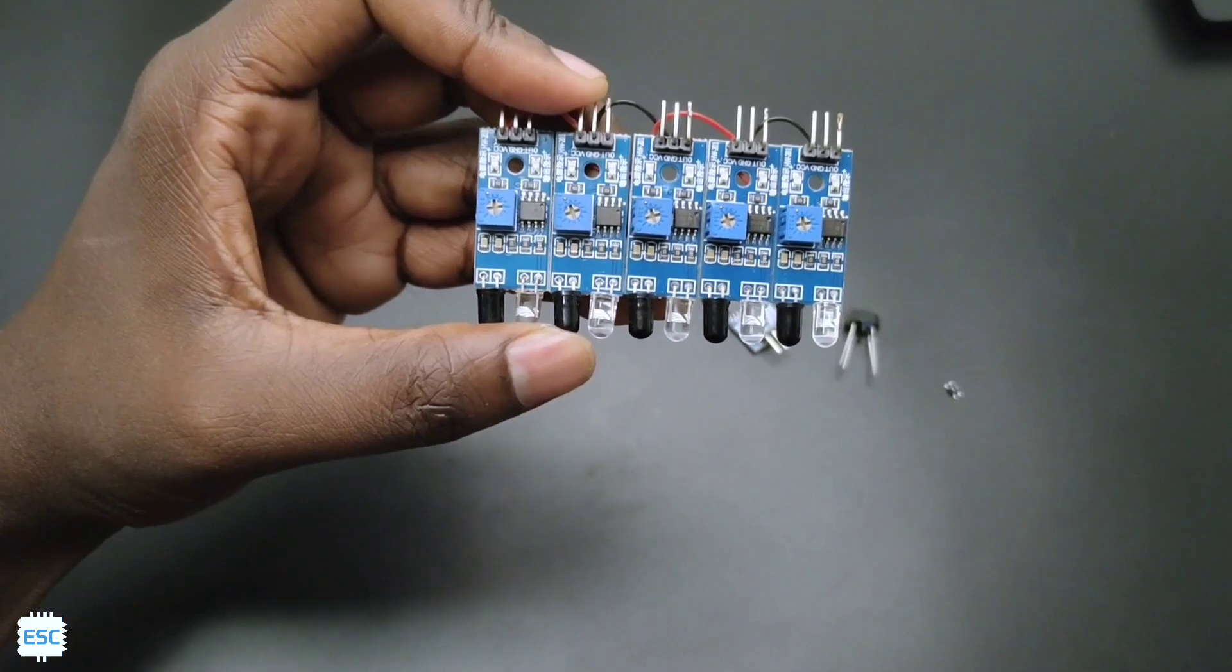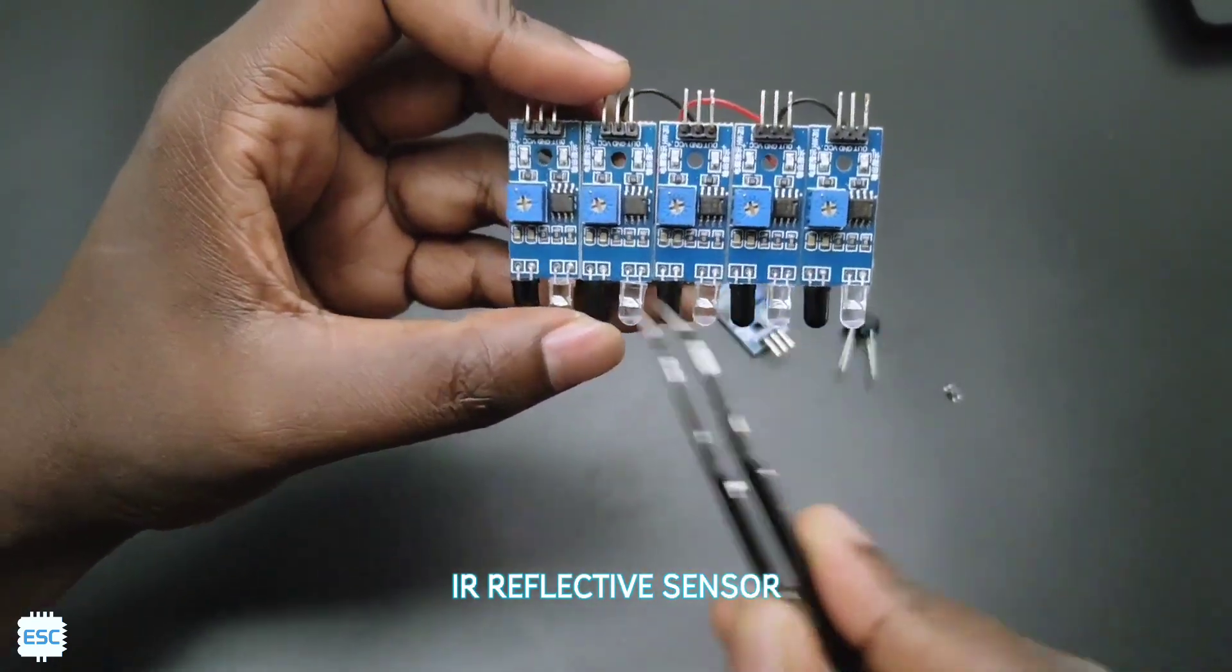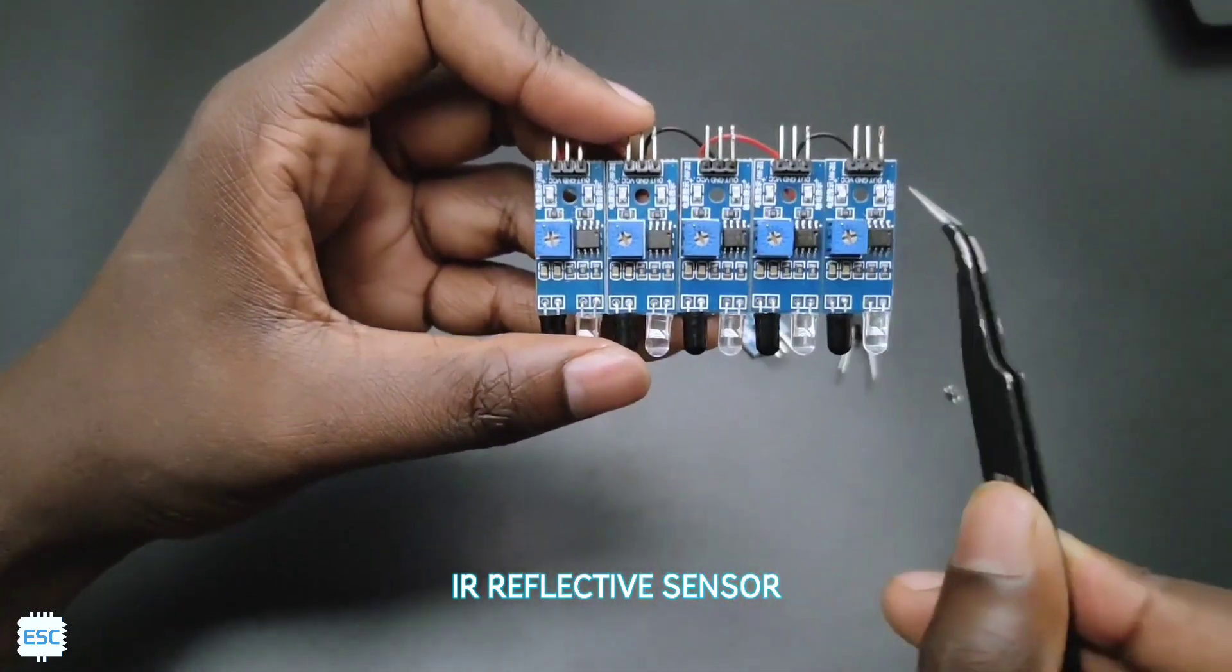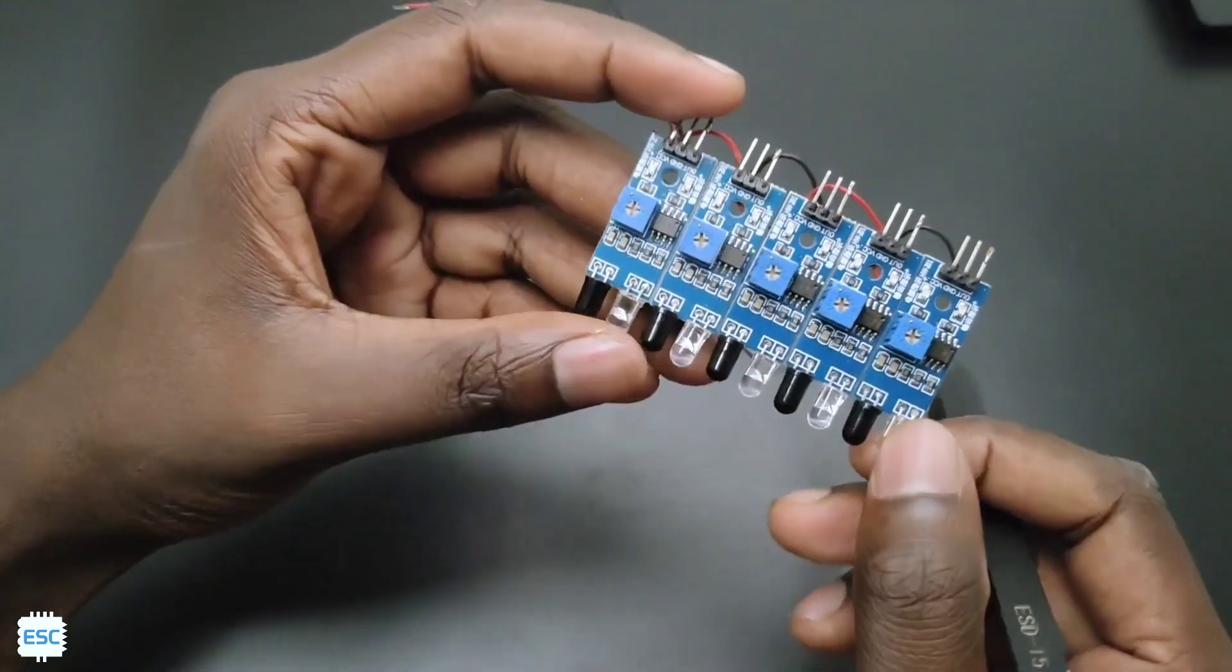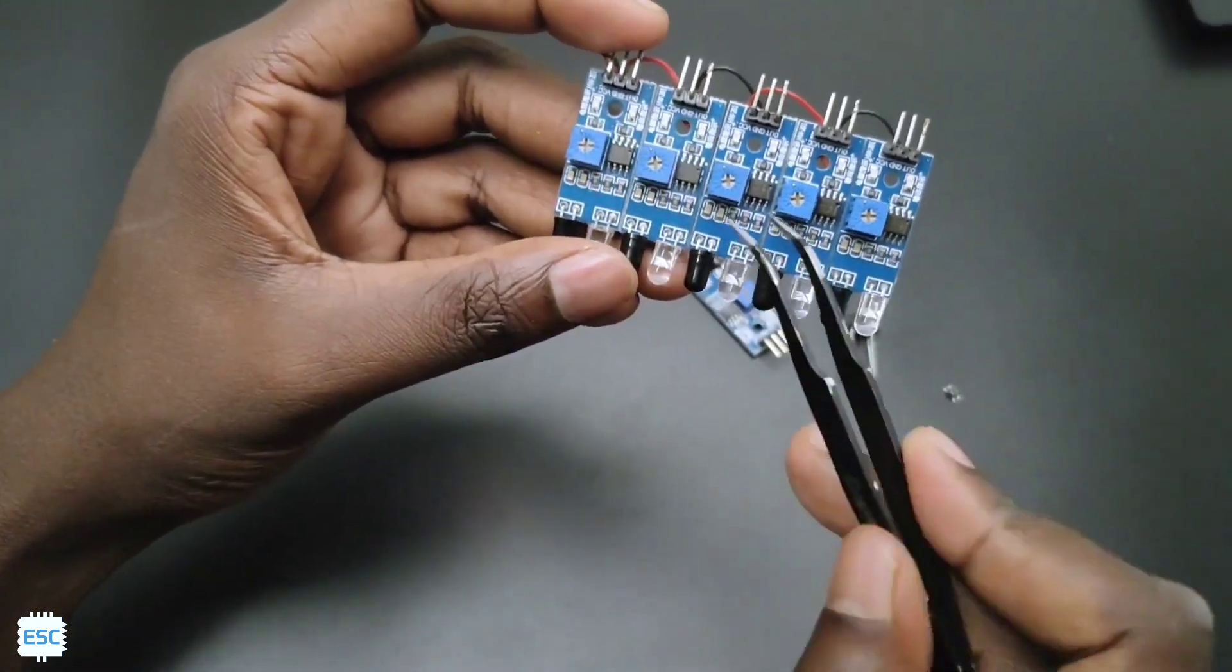This is the IR obstacle sensor, which has a larger sensing range, sensitivity adjustment, and indication LED. The problem with this sensor is we need to stack these sensors to get an array, and that will become heavy and bulky.